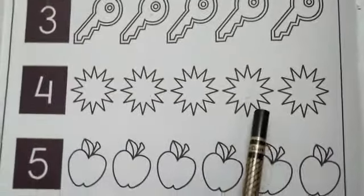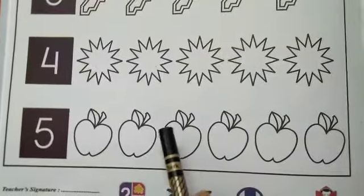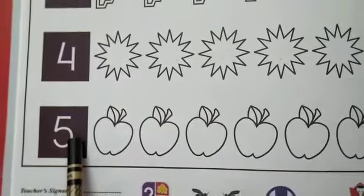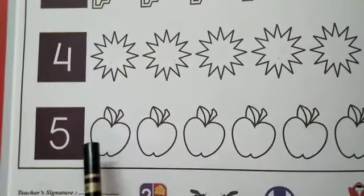Sachi, Sachi stand up. Sachi stand up. Which number is this Sachi? Number five ma'am. Very good. Sit down.